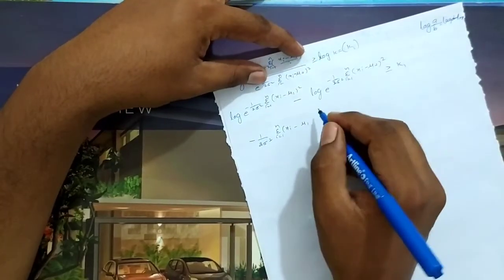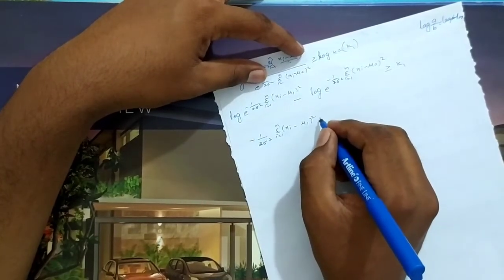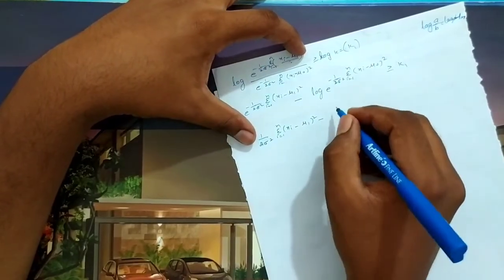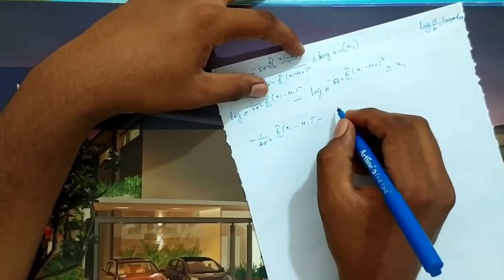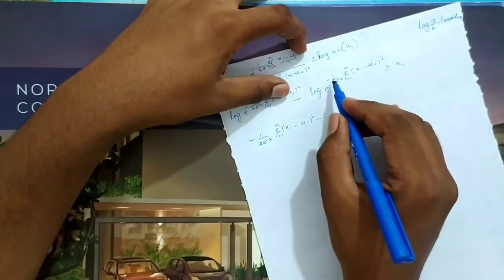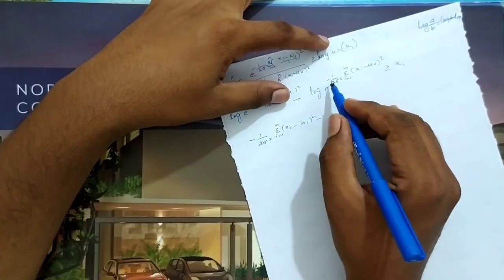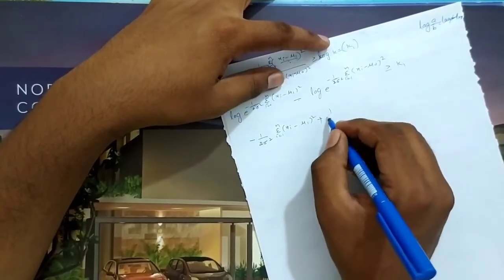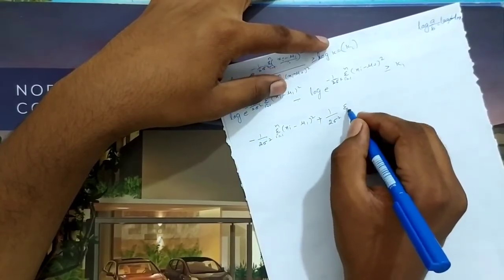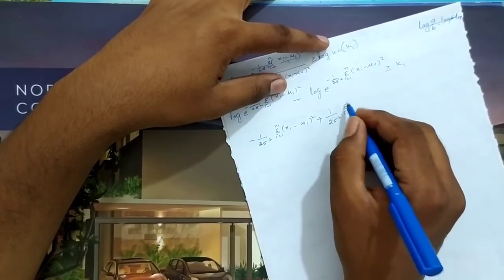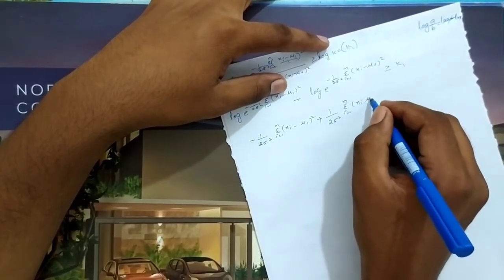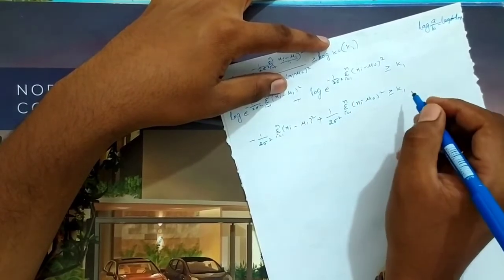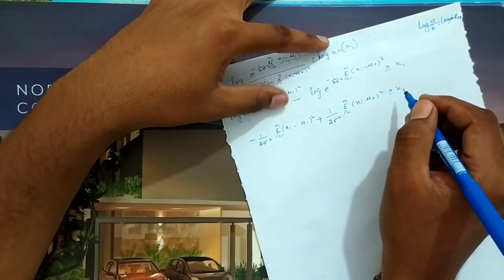So we have: −(1/2σ²) Σi=1 to n (xi − μ1)² − [−(1/2σ²) Σi=1 to n (xi − μ0)²] ≥ k1. We can take the common factor (1/2σ²) out.